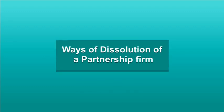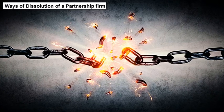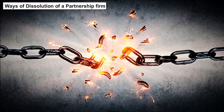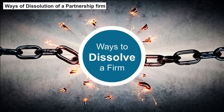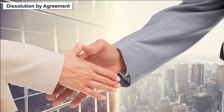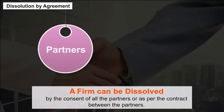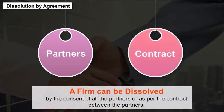Ways of Dissolution of a Partnership Firm. The dissolution of a firm can happen in many ways. Let us discuss them one by one. Dissolution by Agreement: A firm can be dissolved by the consent of all the partners or as per the contract between the partners.